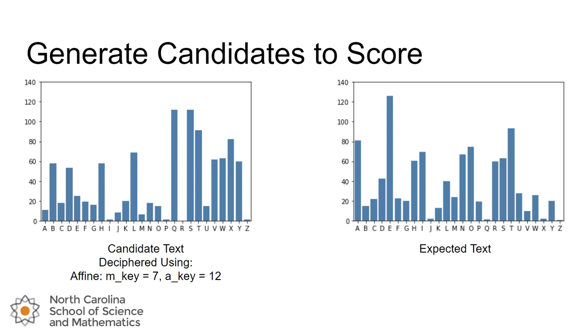What we hope we could do is find a way to quantitatively, meaning based off of calculations and numbers, find a way to compare the candidate text that we generate by trying to decipher with some key pairings to the expected text based off of probabilities. So we're going to find a way to score this. And here's how we're going to do that.